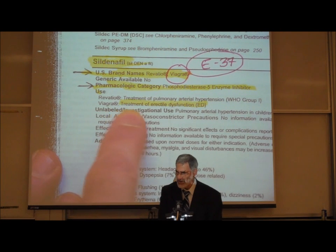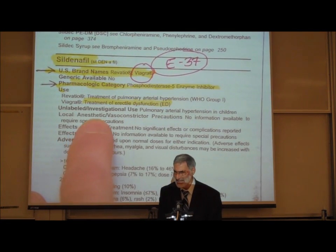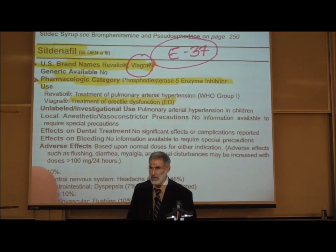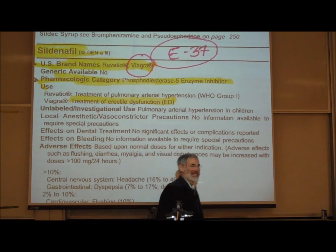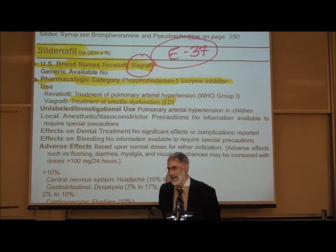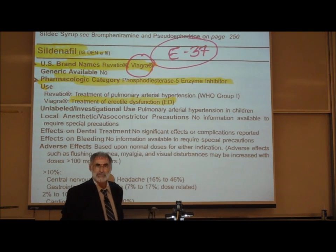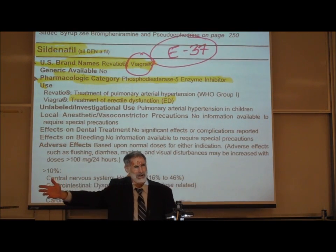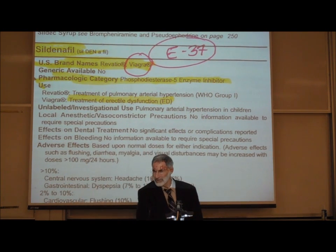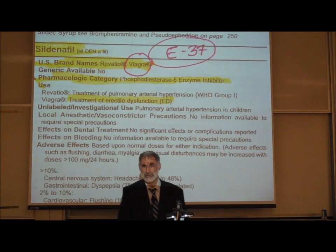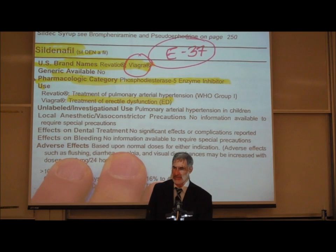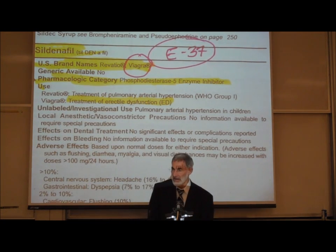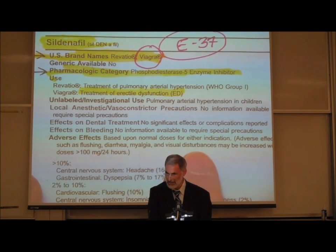Interestingly, it has an unlabeled use: it is given to people with pulmonary hypertension to lower blood pressure in their pulmonary circuit. So people in the hospital who have pulmonary high blood pressure may be taking Viagra. You may look up the drug and wonder why someone with a cardiovascular problem is on Viagra — but they're using it for that purpose. For the unlabeled use of pulmonary hypertension, it would be for everybody, not just males, since it dilates other vessels as well.